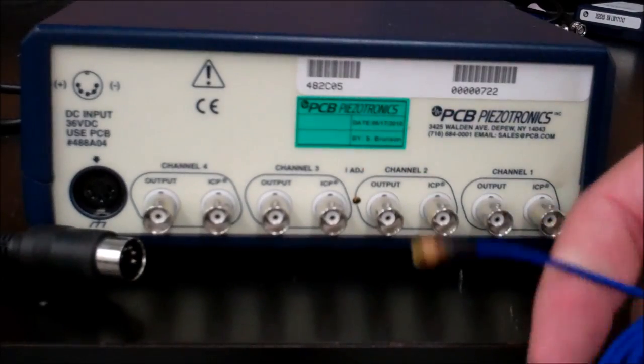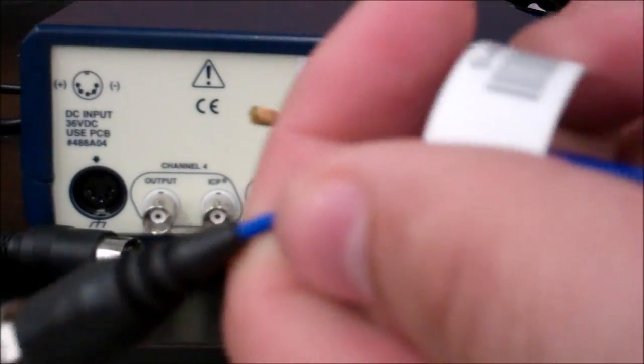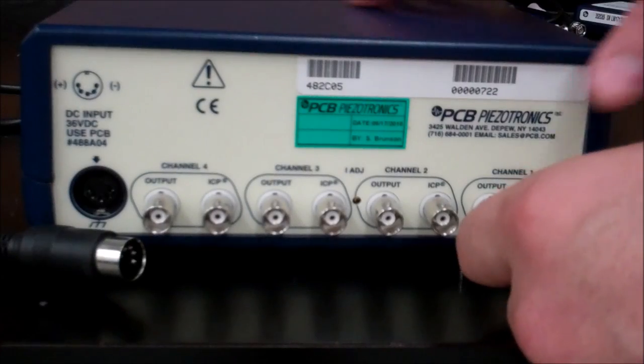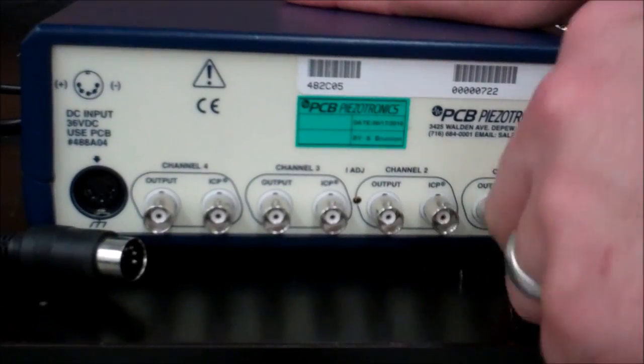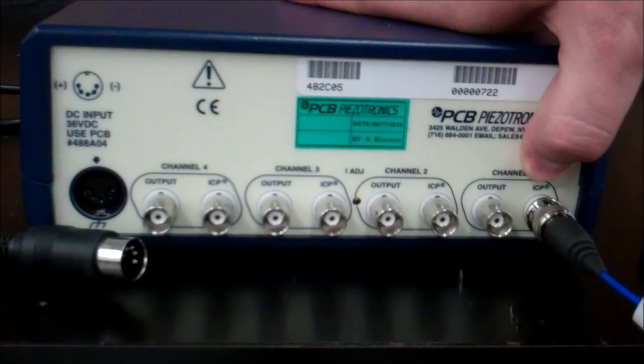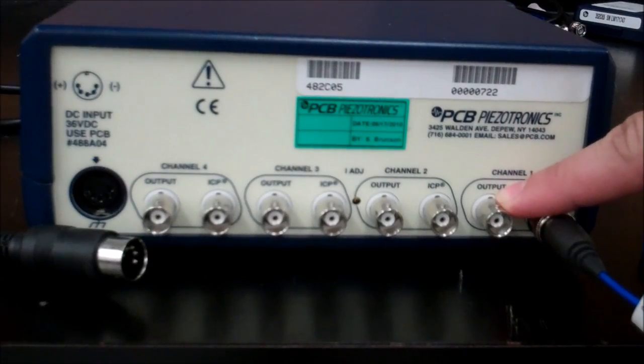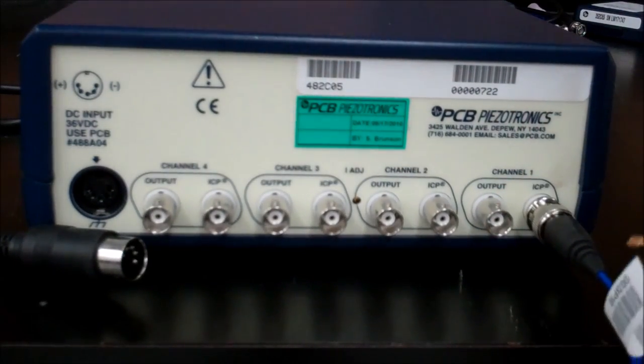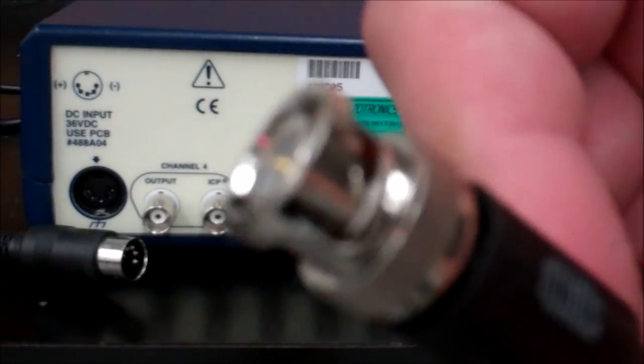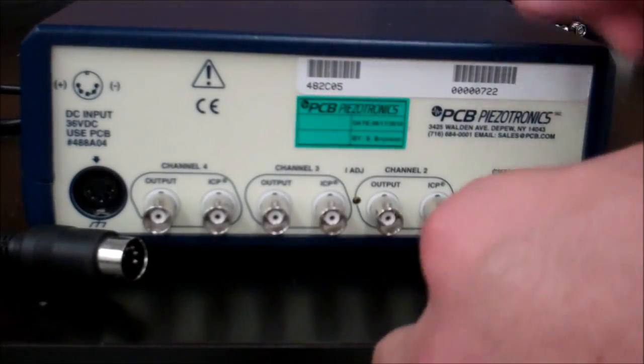Once you have your accelerometer hooked up, you're going to take the BNC cable that's connected to it and connect it into the channel 1 ICP port. Channel 1 is on the right here. The left side of channel 1 is the output. You're going to take your BNC cable, the BNC to BNC cable, and connect it to the output there.